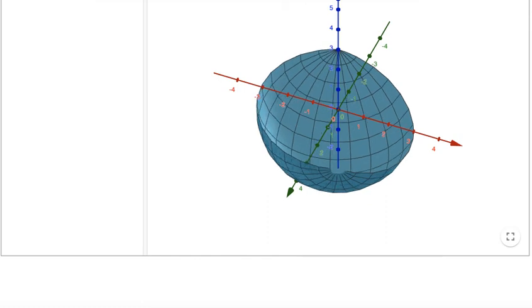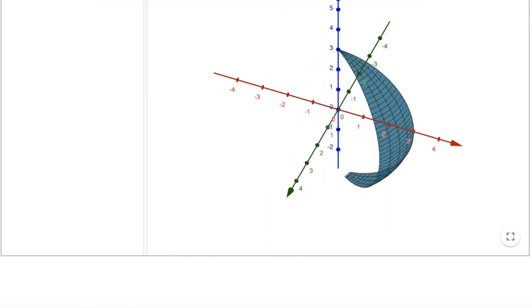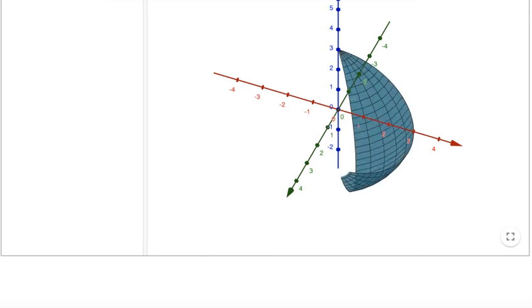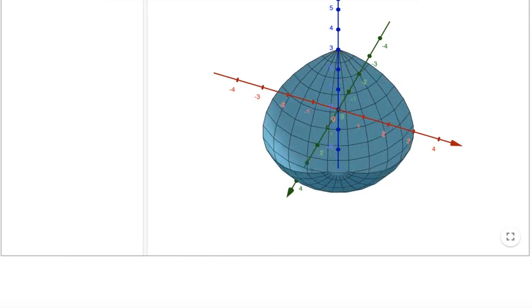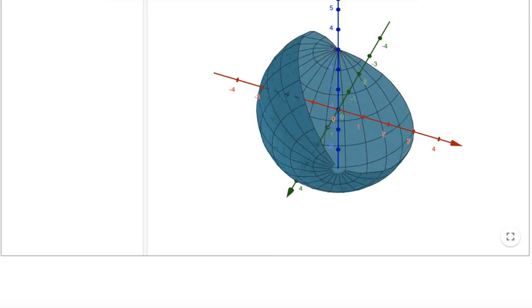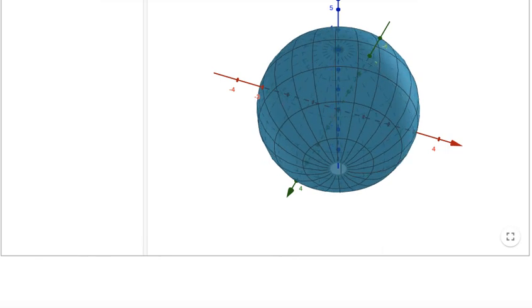The very interesting fact about the sphere is, if you have a semicircle, if you rotate that, you revolve around its diameter, it is forming a sphere. That is the very interesting fact.